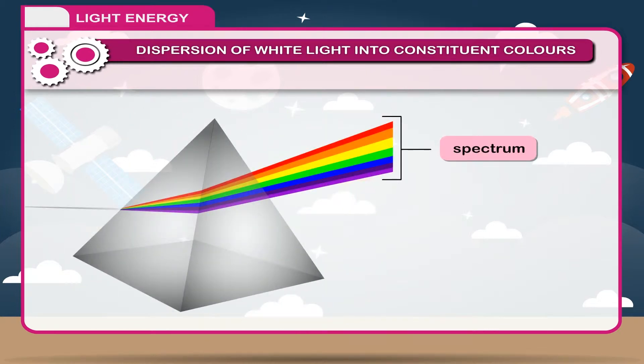The prism does not emit any light. It splits the white light into its constituent colours.